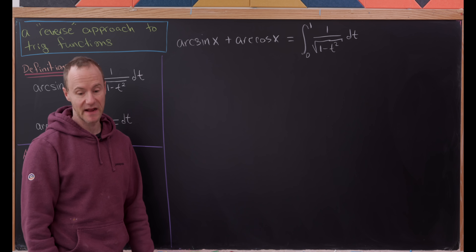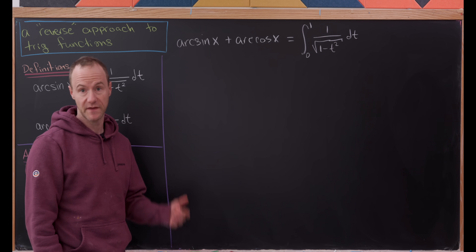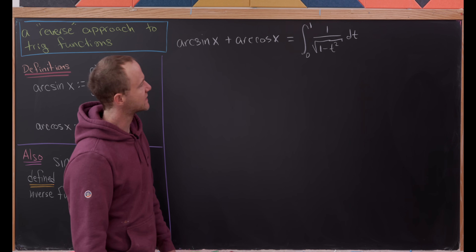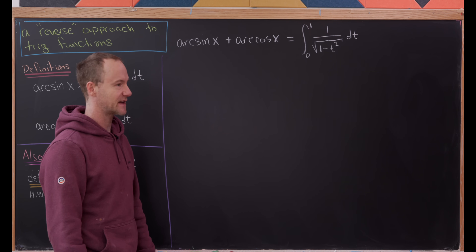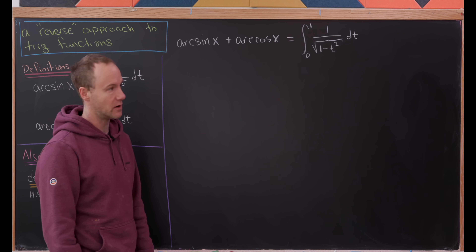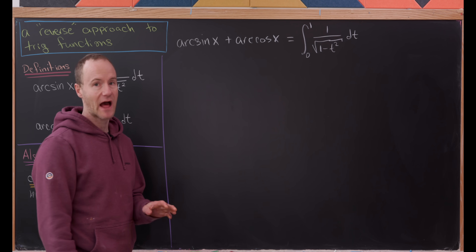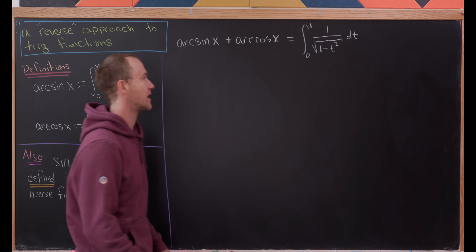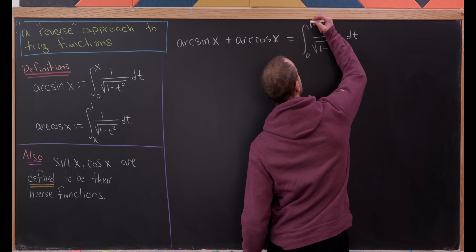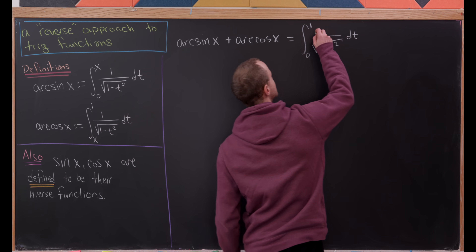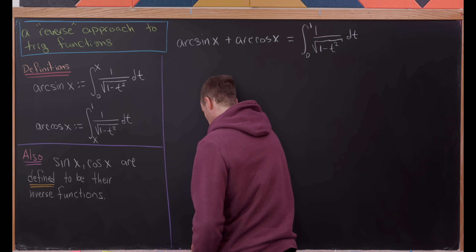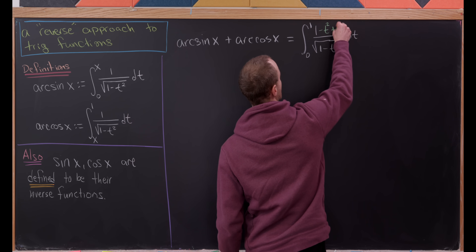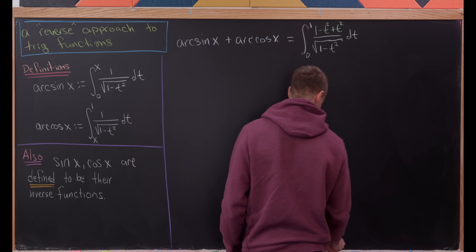Let's evaluate that integral. We're going to use a little bit of a trick: add the number 0 in the form of minus t squared plus t squared. So let's take this 1 and subtract t squared, then also add t squared.